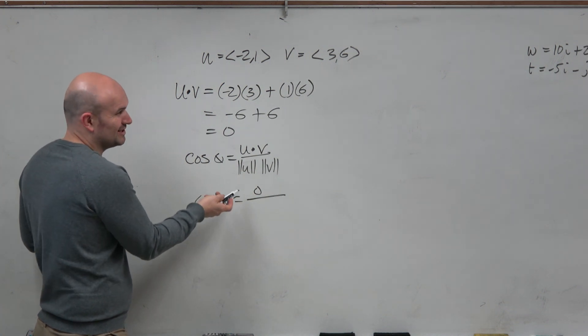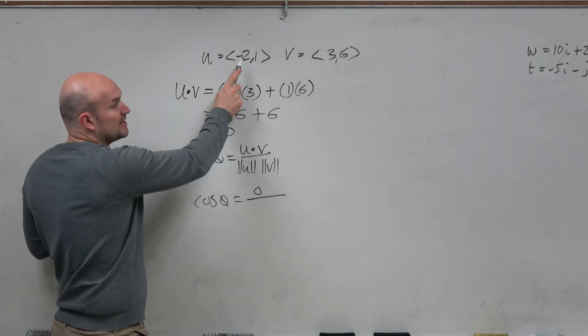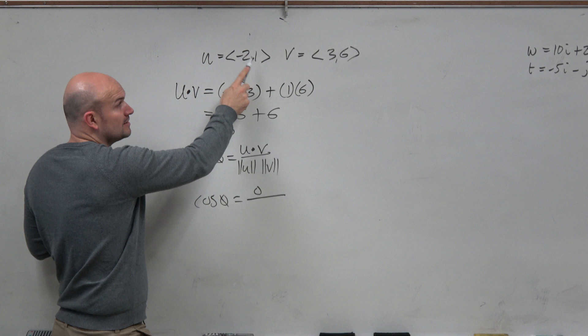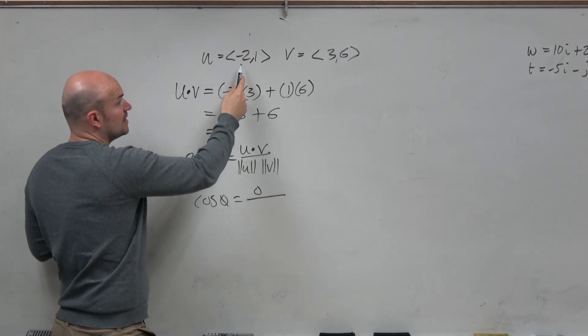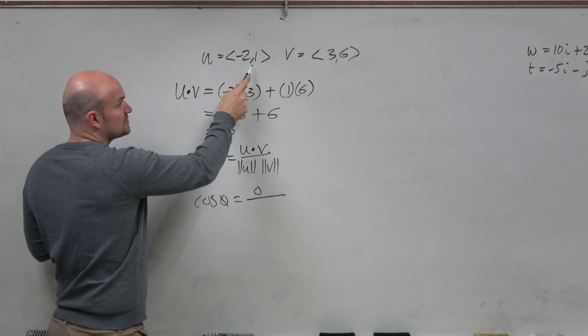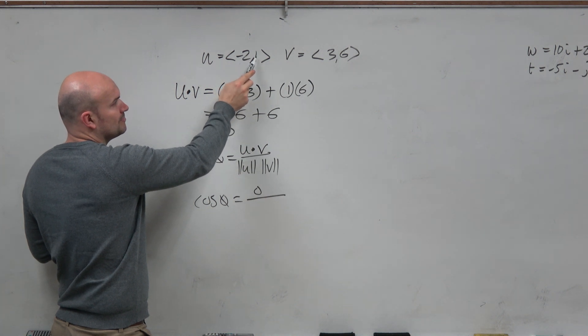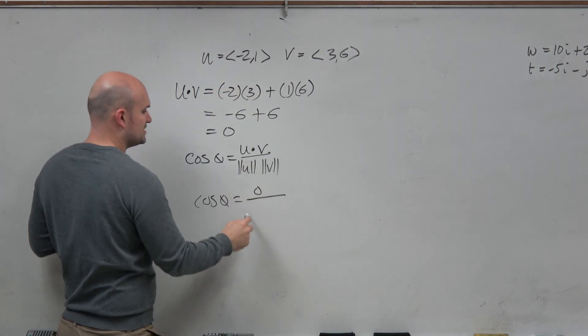Now, again, let's just practice the magnitude. We don't really need to figure these out. But again, magnitude, remember, is the square root of first component squared plus second component squared. So this is going to be 4 plus 5 when you square them. So it's going to be the square root of 5.